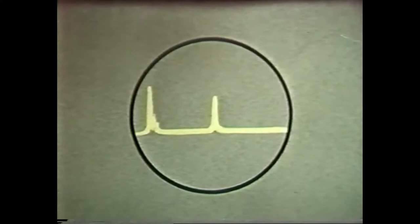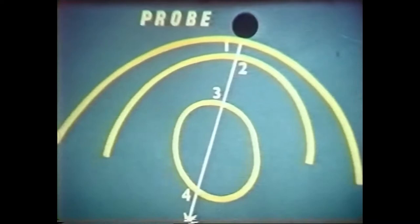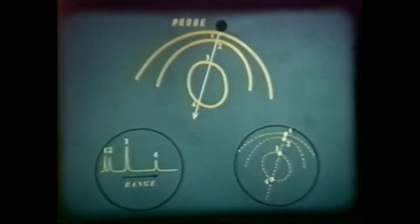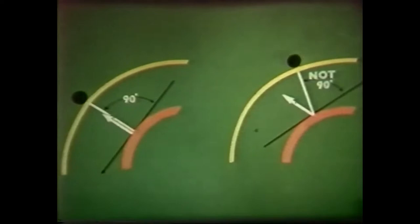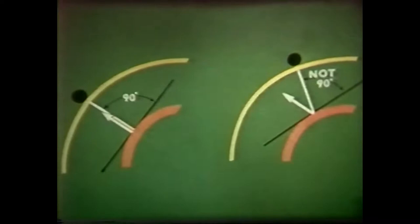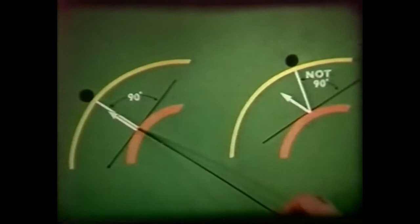Ultrasonic energy is vibrational energy of very high frequency — above the range of hearing. Because of this, it can be propagated and reflected as a beam. Unfortunately, the human body has a great profusion of reflecting interfaces and echoes get scattered at random. For an echo to return to the probe, the ultrasonic beam must strike the reflecting surface at right angles; otherwise the echo will be lost to the probe.